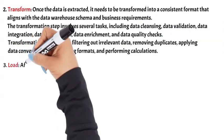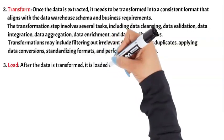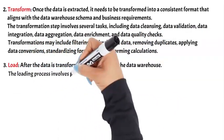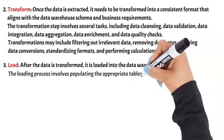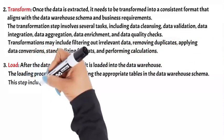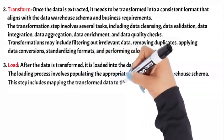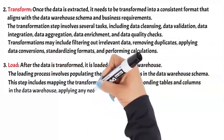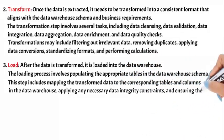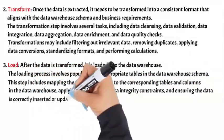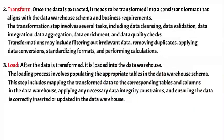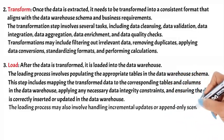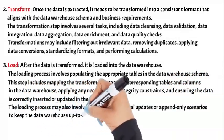Step 3 – Load: After the data is transformed, it is loaded into the data warehouse. The loading process involves populating the appropriate tables in the data warehouse schema. This step includes mapping the transformed data to the corresponding tables and columns in the data warehouse, applying any necessary data integrity constraints, and ensuring the data is correctly inserted or updated in the data warehouse. The loading process may also involve handling incremental updates or append-only scenarios to keep the data warehouse up to date.